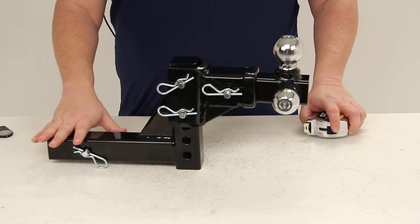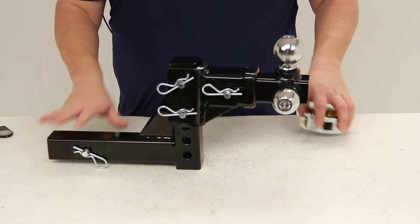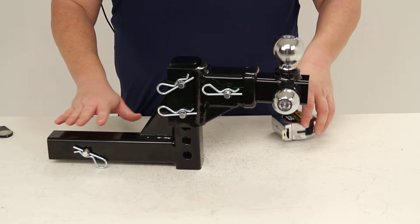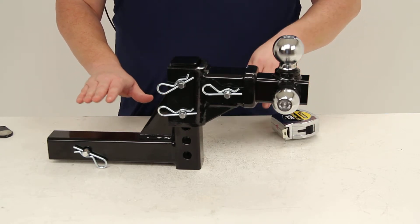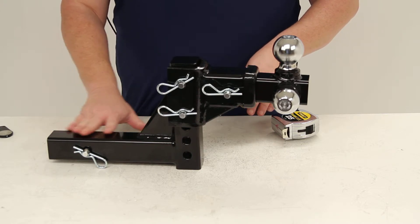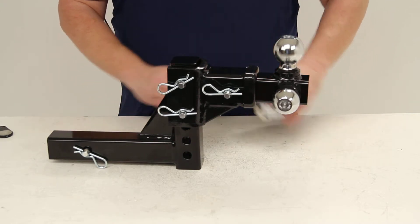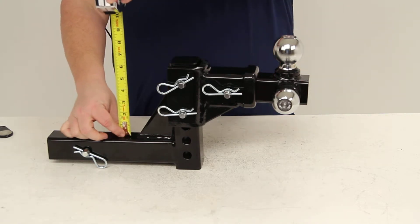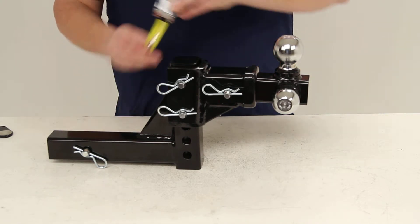As I said earlier, it does fit a two-inch receiver. The maximum rise—you would measure from the top of the bar that goes into the hitch receiver to the top of the hitch here—and that is five and three-quarter inches.